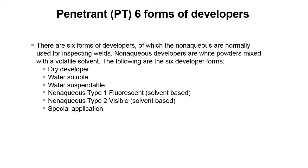There are six forms of developers, of which the non-aqueous are normally used for inspecting welds. Non-aqueous developers are white powders mixed with a volatile solvent. The six developer forms are: dry developer, water-soluble developer, water-suspendable, non-aqueous type 1 fluorescent solvent-based, non-aqueous type 2 visible solvent-based, and special application.